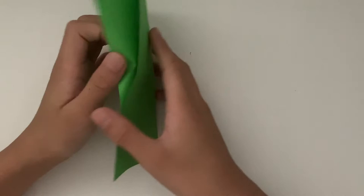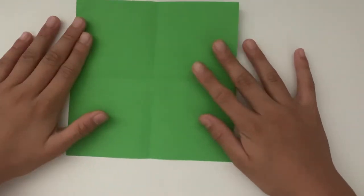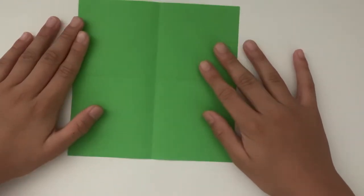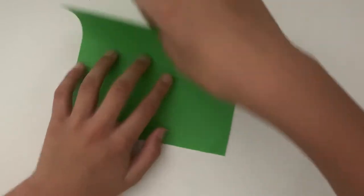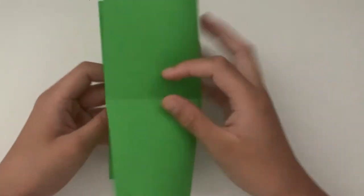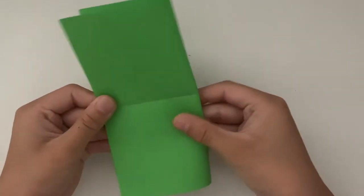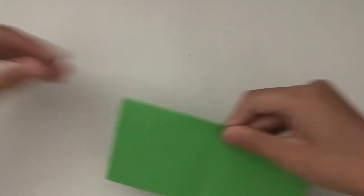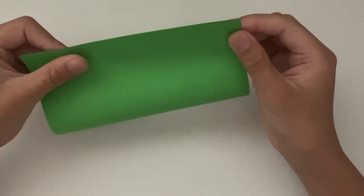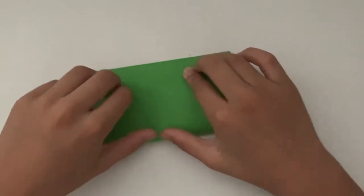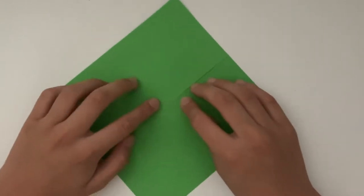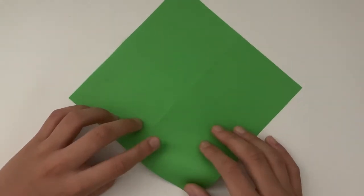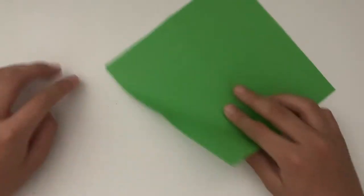Alright, now we're going to unfold again, and now we're going to flip it over. Then do it again on the back just to reinforce the creasing. Unfold, and now we're going to take this edge and sort of line it up with this corner.